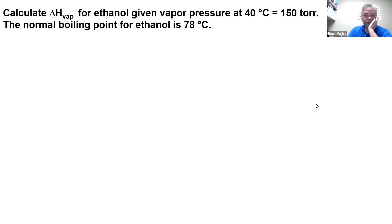Let's have a Clausius-Clapeyron equation problem, but this time you're asked for the heat of vaporization. You're asked to calculate the heat of vaporization for ethanol given the vapor pressure at 40 degrees Celsius of 150 torr, and the normal boiling point for ethanol 78 degrees Celsius.